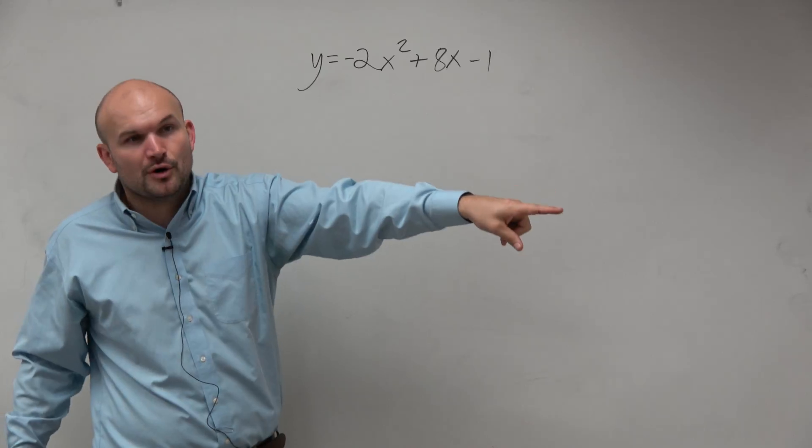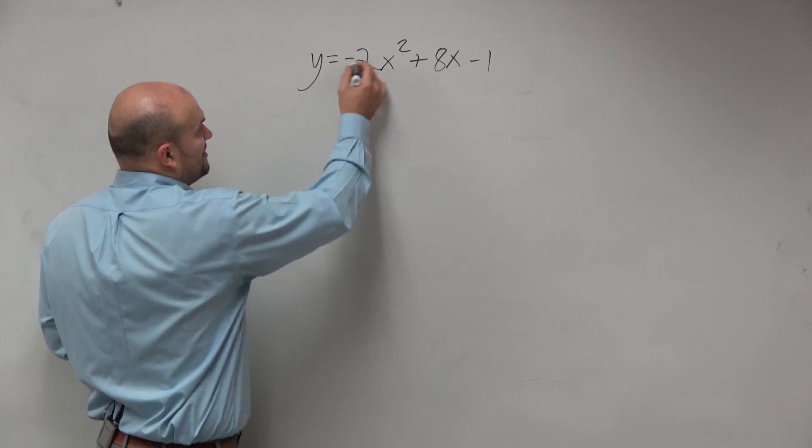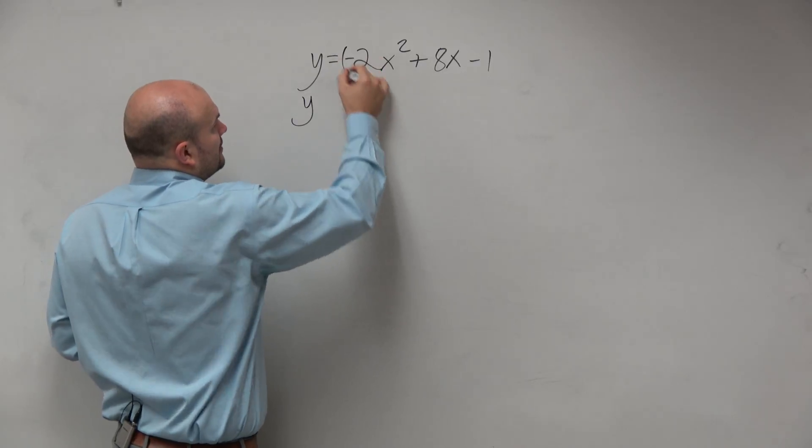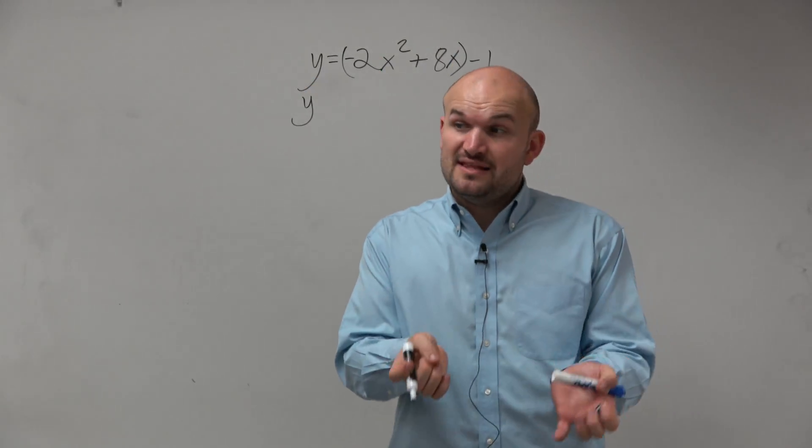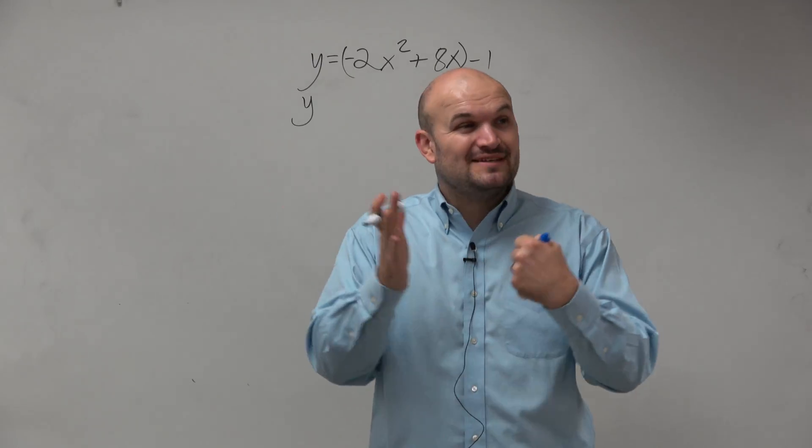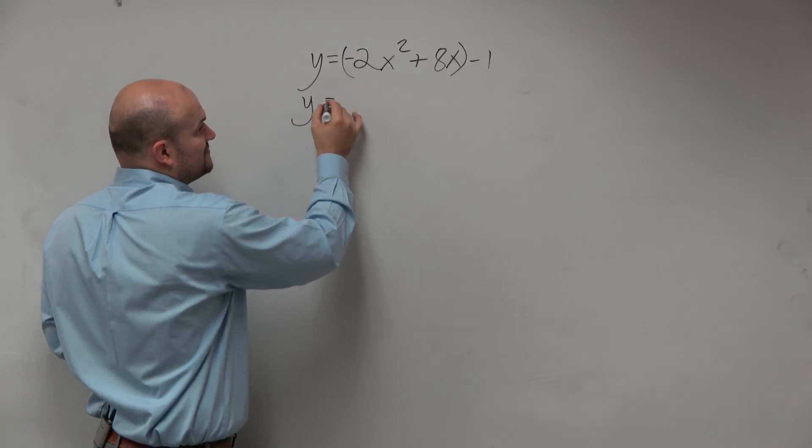I can't factor it like I did my bonus problem. So a couple things we're going to do. First thing is I'm going to group my first two terms. Actually, let's group my first two terms just like this. However, again, to find the perfect square trinomial, you have to have your first term be a square term. So what I'm going to do is I'm going to factor out a negative 2.